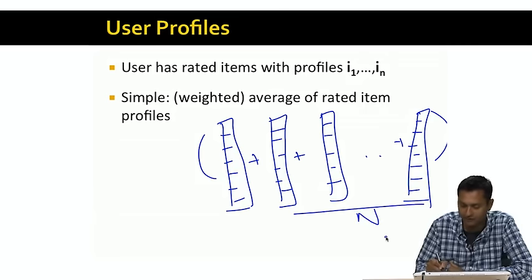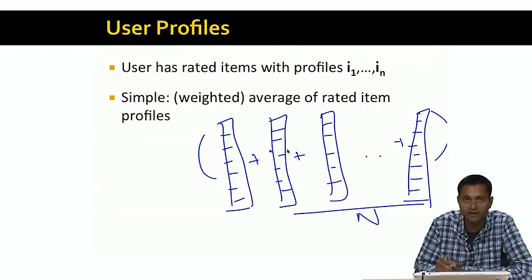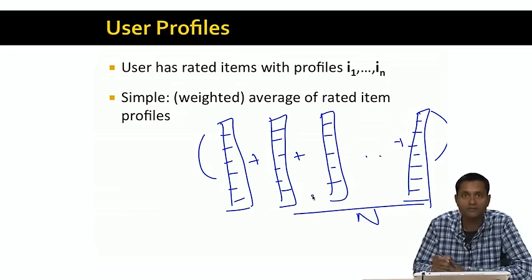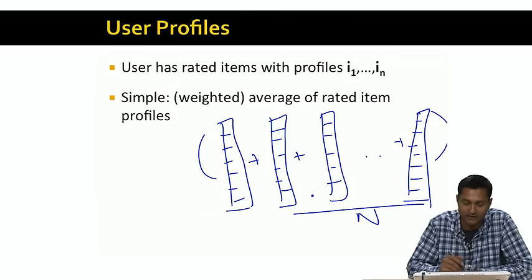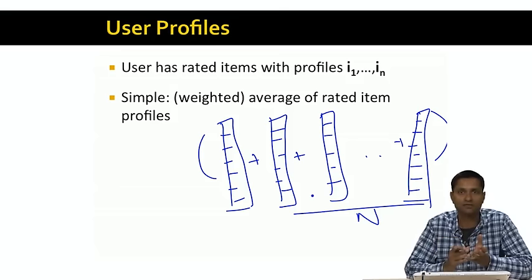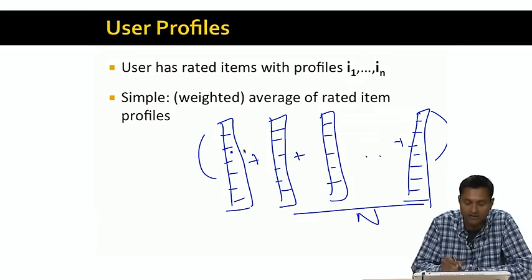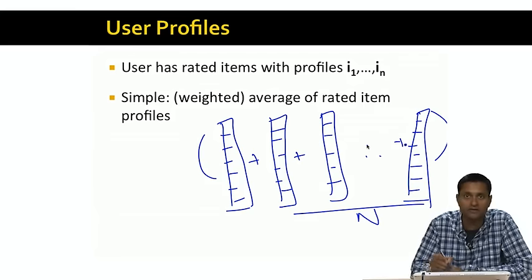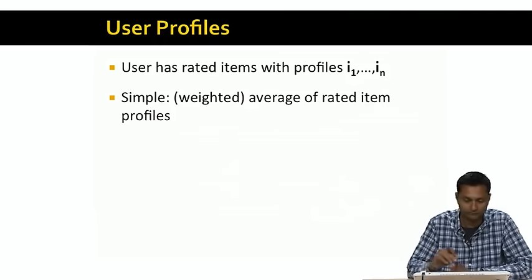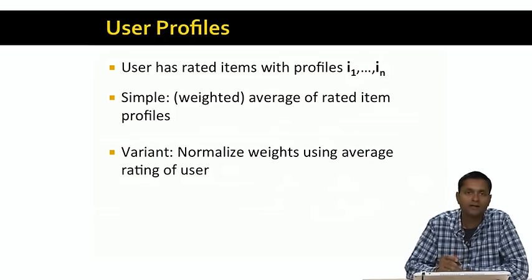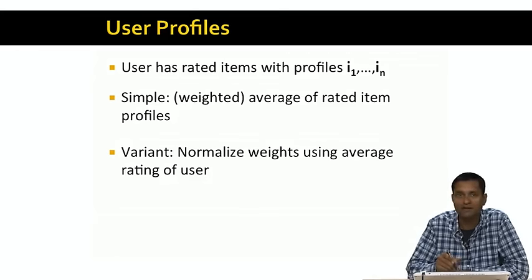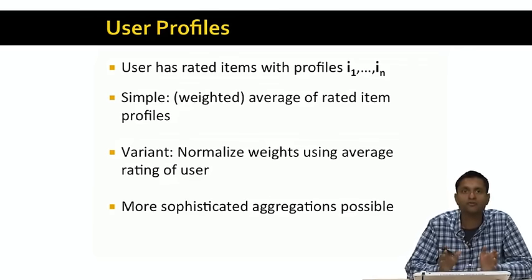The simplest way to construct a user profile from a set of item profiles is just to average the item profiles, where N is the total number of item profiles. This doesn't take into account that the user liked certain items more than others. So in that case, we might want to use a weighted average, where the weight is equal to the rating given by the user for each item. A variant of this is to normalize these weights using the average rating of the user, and much more sophisticated aggregations are also possible.